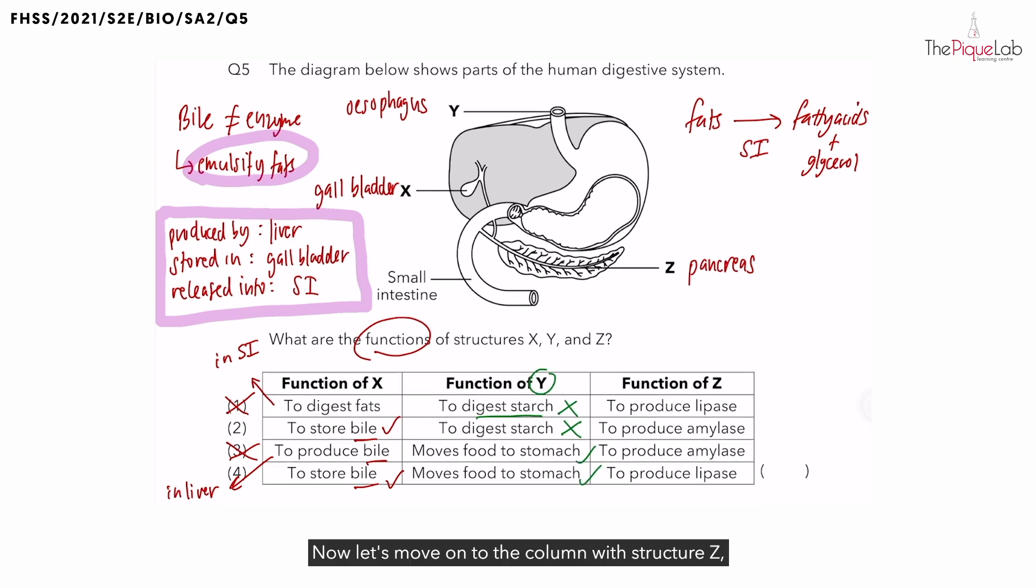Now let's move on to the column with structure Z, the pancreas. If you scan through the options, all are related to producing substances that ends with A-S-E. Now what are those substances? Since their names all end with A-S-E, these are all enzymes.